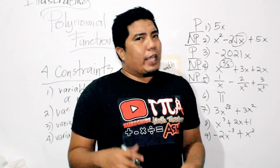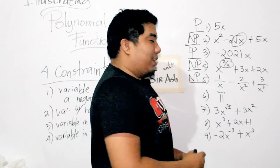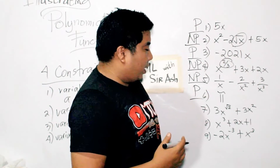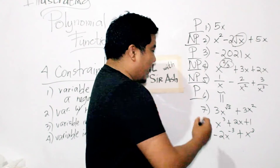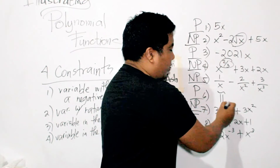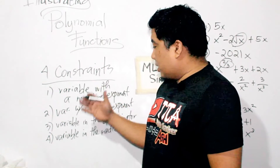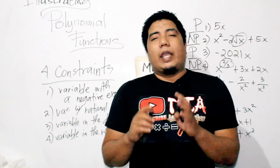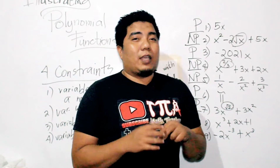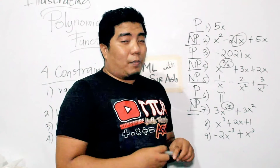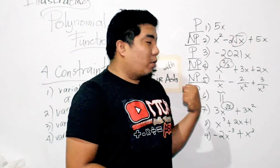Number six, we have pi. Is pi a polynomial? Of course — pi is a constant value, therefore this can be said to be a polynomial. For number seven, we have 3x to the power of square root of 2 plus 3x squared. This is not a polynomial because the exponent is a non-integer, that is square root of 2. Remember, in our definition of a polynomial function, the exponents should not be a negative or non-integer number — it could be zero or a positive integer, but not a rational number or non-integer.